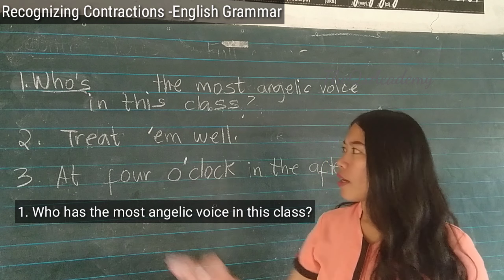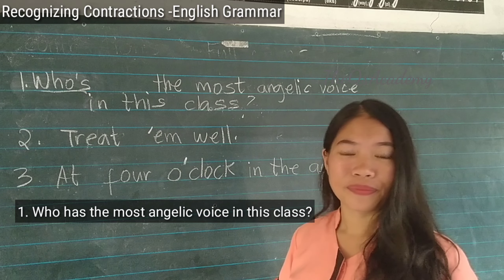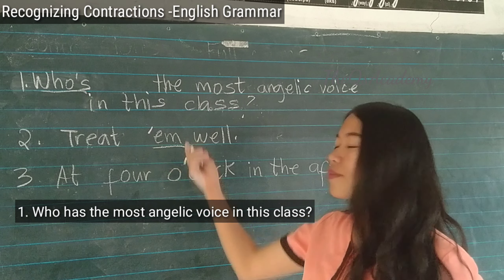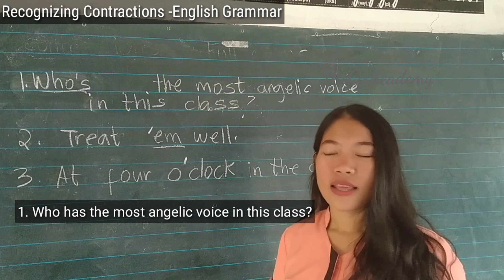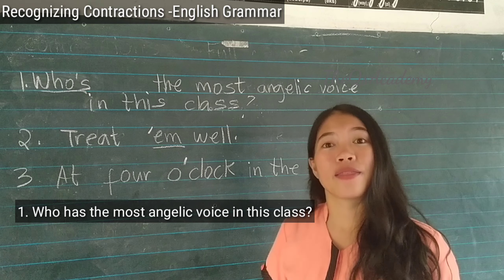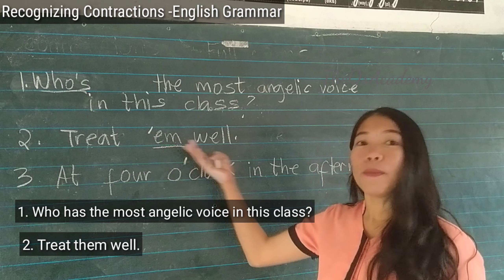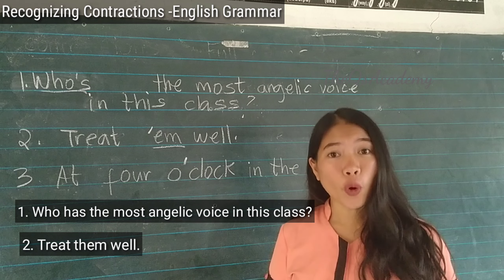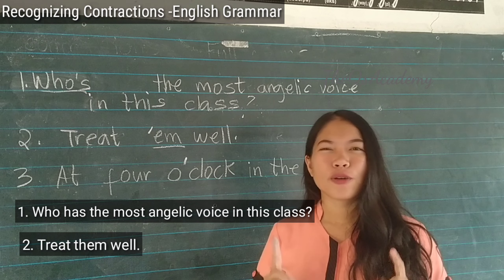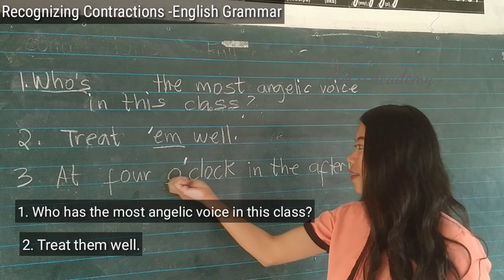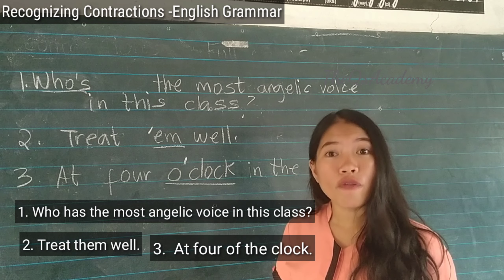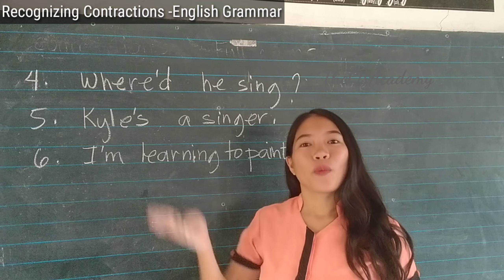Number two: 'Treat 'em well.' The contracted word is ''em', and the full word is 'them' — 'Treat them well.' Number three: 'At four o'clock in the afternoon.' The contracted word is 'o'clock', and the full form is 'of the clock'. Number four: 'Where'd he sing?' The contracted word is 'where'd', and its full form is 'where did he sing'.